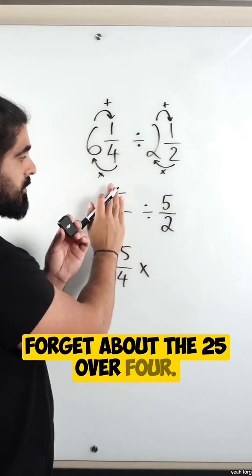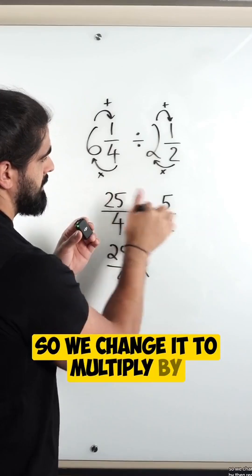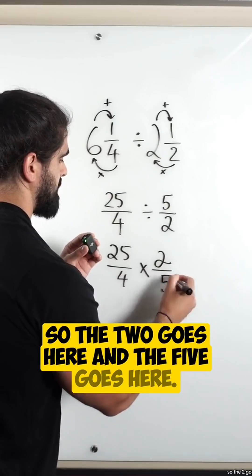Forget about the 25 over four, we're talking about this. So we change it to multiply by, then reciprocate the two and the five. So the two goes here and the five goes here.